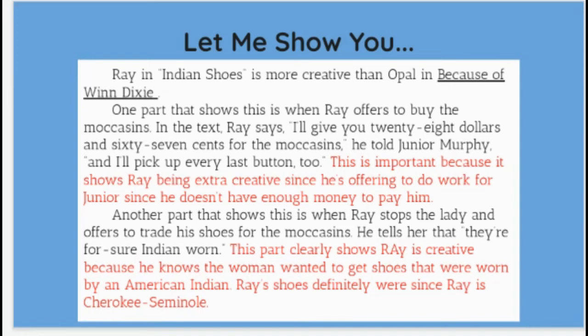Now I can see why that matters! Another part that shows this is when Ray stops the lady and offers to trade his shoes for the moccasins — he tells her that they're for sure Indian-worn. This part clearly shows Ray is creative because he knows the woman wanted shoes that were worn by an American Indian, and Ray's shoes definitely were, since Ray is Cherokee Seminole. So now I explain the evidence, because I could have used that evidence for different claims, but I had to explain why it was important to my claim.